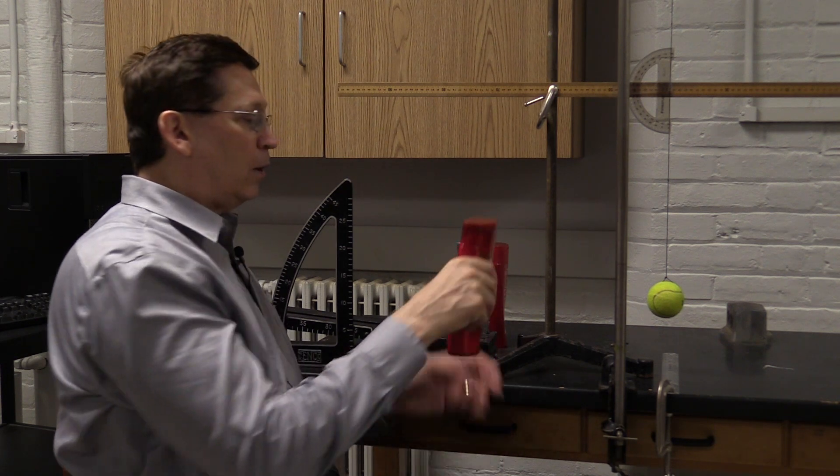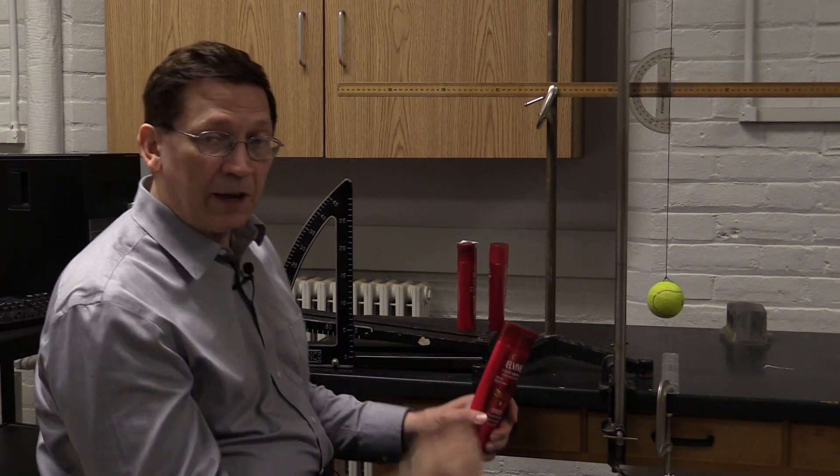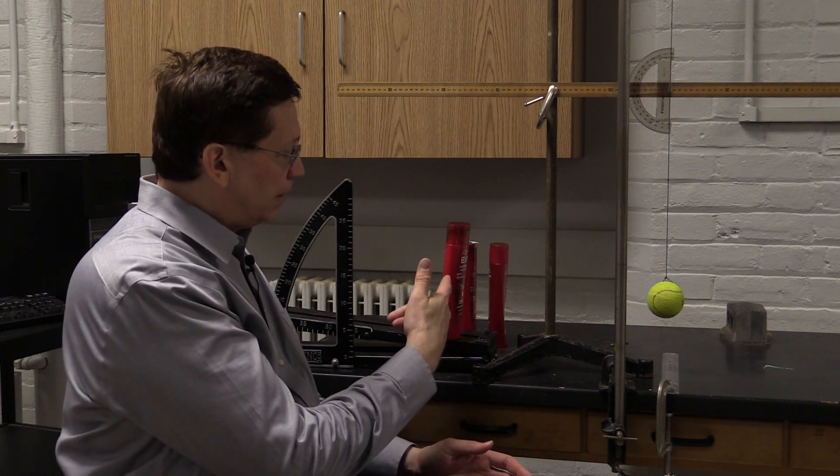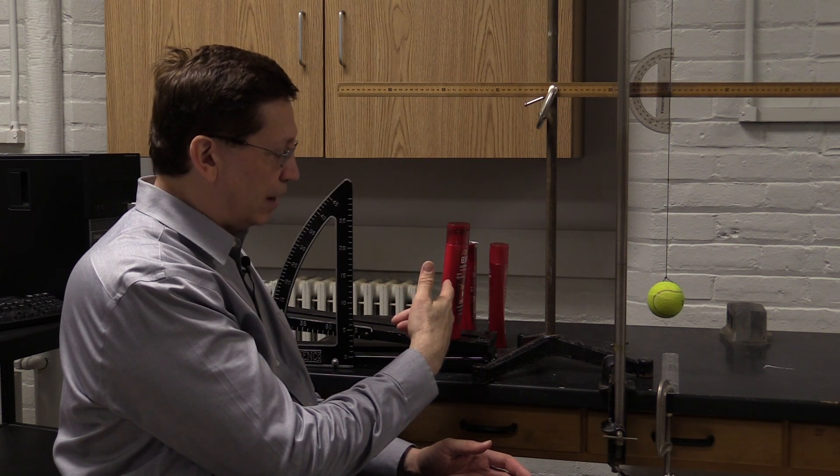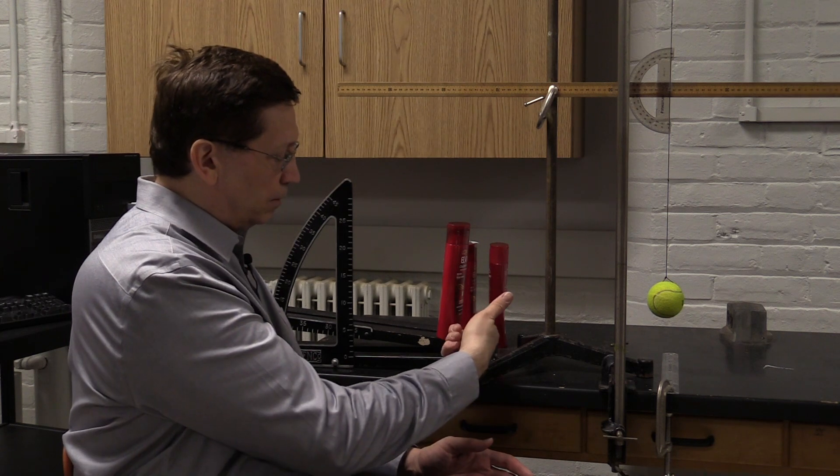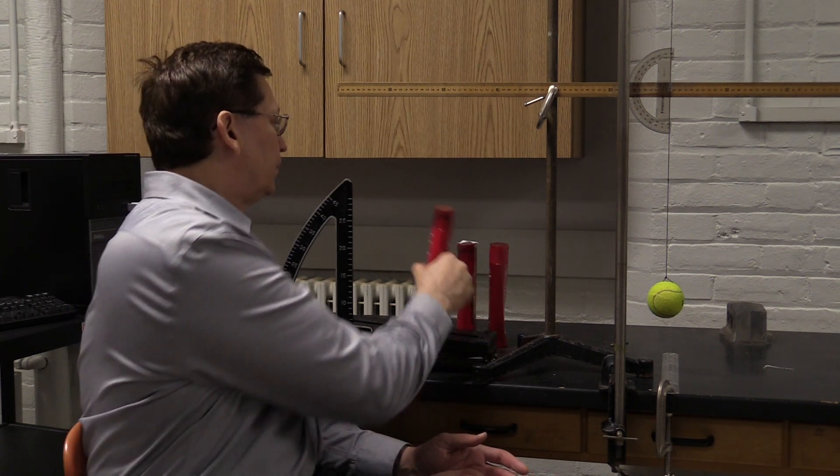I have a ramp here set to 7 degrees. When I put a full shampoo bottle on that, it's perfectly fine, perfectly happy. That's because the center of mass of this object is on the uphill side of the forward edge of the bottle.